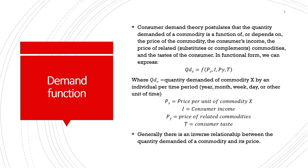Consumer demand theory postulates that quantity demanded of a commodity is a function of various factors. When we talk about demand for a commodity X, there is a functional relationship between quantity demanded and the price of that commodity, the consumer's income, the price of related goods or commodities, and the taste of the consumer. Quantity demanded of X can be examined across various time periods—a year, month, week, or day.